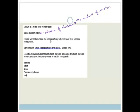This explains why sodium has a low electron affinity with reference to its electron configuration. If you look at the periodic table, sodium is in group one, it's Na+. It's in group one, period three.